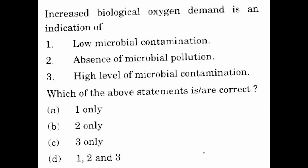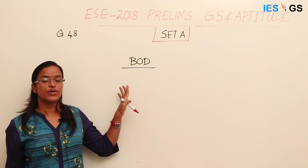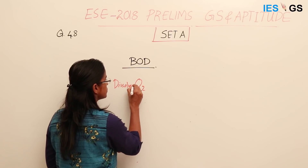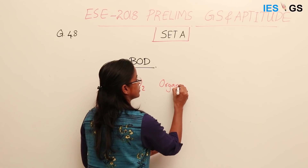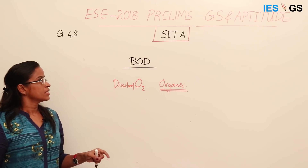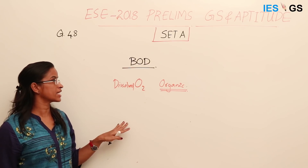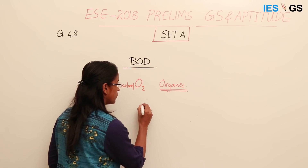Question 48: Increased Biological Oxygen Demand (BOD) is an indication of: First, low microbial contamination; Second, absence of microbial pollution; Third, high level of microbial contamination. Which of the above statements are correct? BOD means the amount of dissolved oxygen required to degrade the organic matter present in water, and it is an important measure of the level of pollution in a water body.